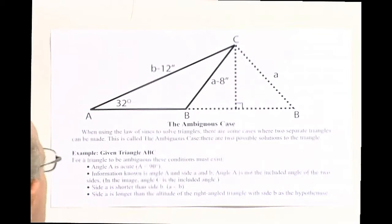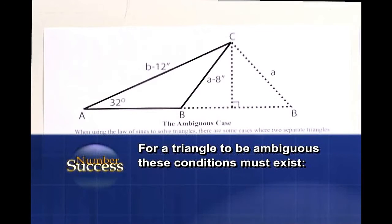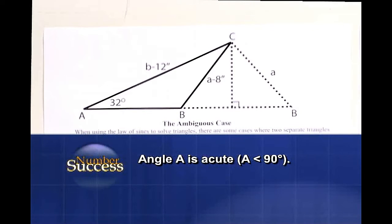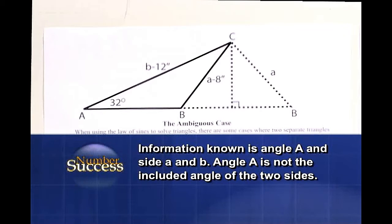When you have this situation, and this is an example of triangle ABC, for a triangle to be ambiguous, these conditions must exist. Angle A is acute - less than 90 degrees, which we have over here. Information known is angle A and sides A and B. Angle A is not the included angle of the two sides. It's not this angle, but this angle over here. So this is what makes it ambiguous.